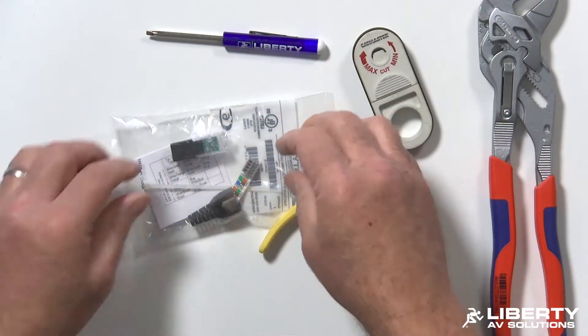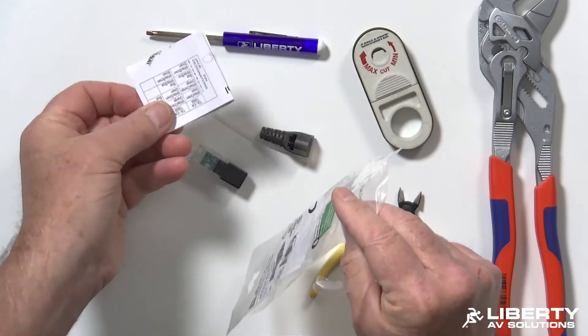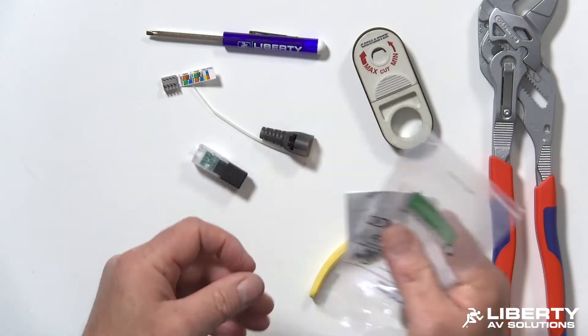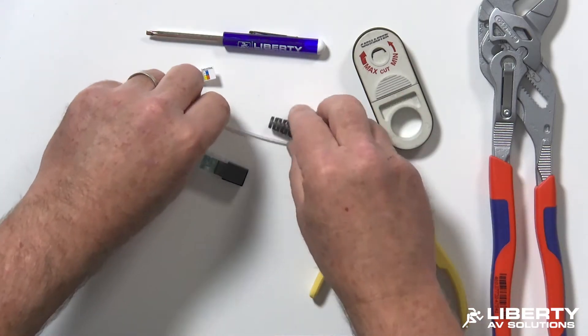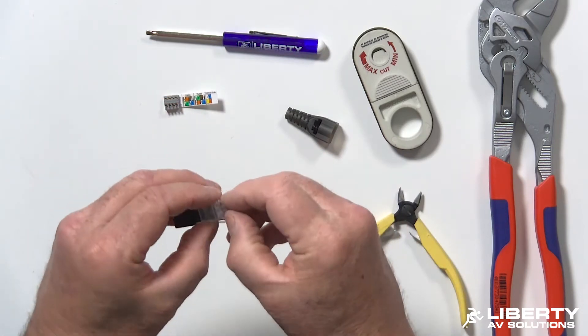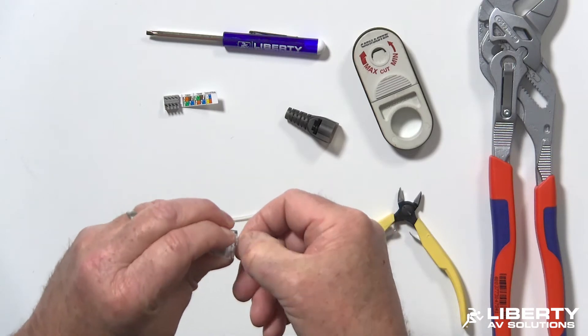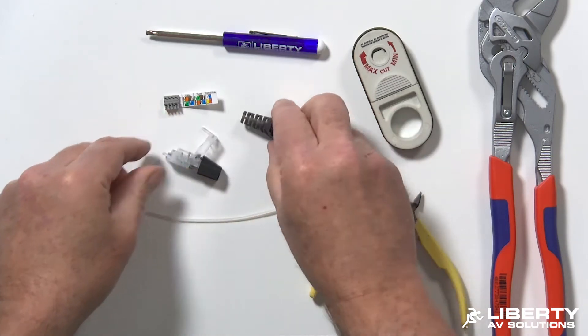Your first step here, I'm going to open up the connector and show you the parts. The connector's going to come with a basic instruction sheet, the bag, and then your parts. You're going to have your load bar, your connector body. Make sure it's open—sometimes these do close on you, this one did. And your boot.